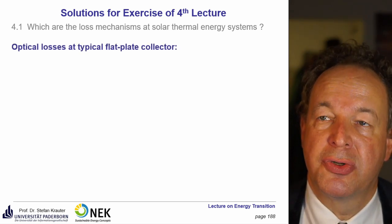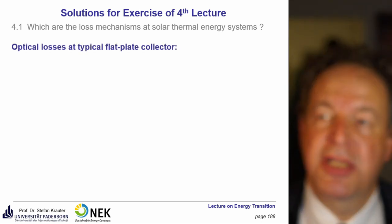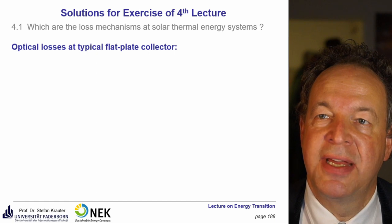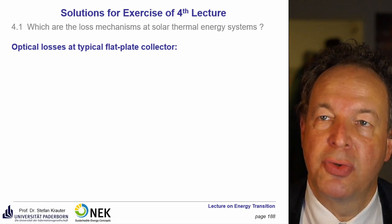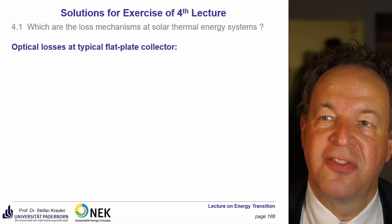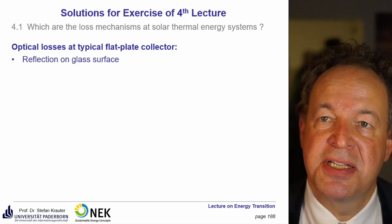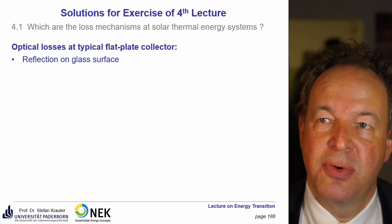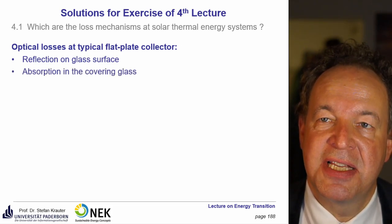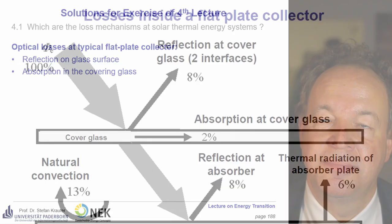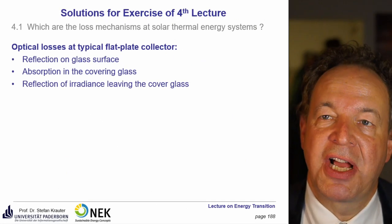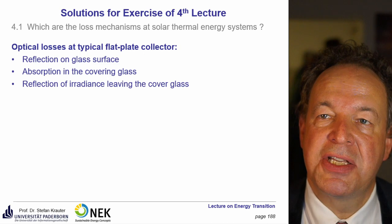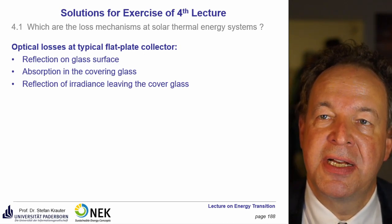Consider a typical flat plate collector and follow the sun inside the module. At the first interface, you have optical losses such as reflection on the glass surfaces. Passing through the glass, you have absorption losses inside the glass depending on its quality. Then you have reflection of irradiance leaving the cover glass — about 4% at each interface.